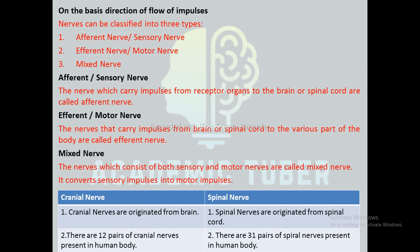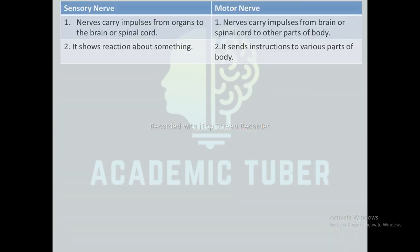Differences between cranial and spinal nerves: cranial nerves originate from the brain, whereas spinal nerves originate from the spinal cord. There are 12 pairs of cranial nerves and 31 pairs of spinal nerves in the body. Differences between sensory and motor nerves: sensory nerves carry impulses from organs to the brain or spinal cord, whereas motor nerves carry impulses from the brain or spinal cord to other parts of the body.